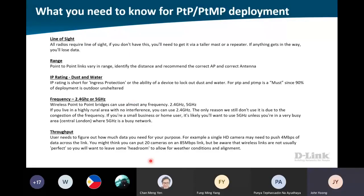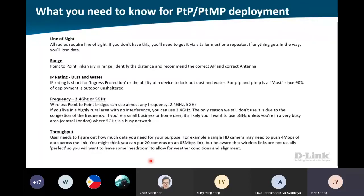For throughput, you need to calculate for each individual site how many cameras need to come back to HQ. Roughly calculate the required bandwidth — for example, 20 cameras each using 2 to 4 Mbps; the default should be 2 Mbps. So 20 times 2 equals 40 Mbps — that's what this bridge requires. But when you do the calculation for the bridge board rate, please double it. If it's required 80 Mbps, make sure the board rate is 160 Mbps. This is because the AP shows you the board rate, but you still need to divide by 2 since the board rate is not the actual wireless speed — you also need to account for the environment.